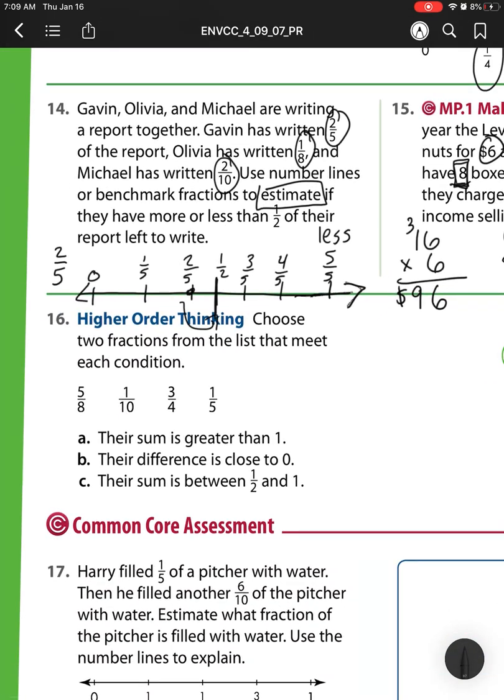Heading off to number 16. Choose 2 fractions from the list that meet each condition. So A, their sum is greater than 1. So I'm looking for 2 fractions. When I add them together, it's bigger than 1. So I need fractions that are bigger than 1 half. Well, I know 5 eighths is bigger than 1 half, and I know 3 fourths is bigger than 1 half. So for A, my answer is 5 eighths and 3 fourths.